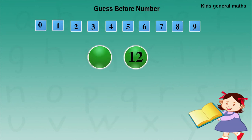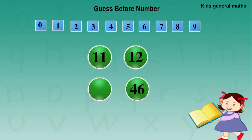Now we are going to find the before number for 2-digit numbers. For the number 12, the first digit, that is 1, should be written as it is. For the second digit 2, we are going to find the before number. Before 2 is 1, so before 12 is 11. Next they are given 46. The first digit, that is 4, should be written as it is. Before 6 is 5, so before 46 is 45.